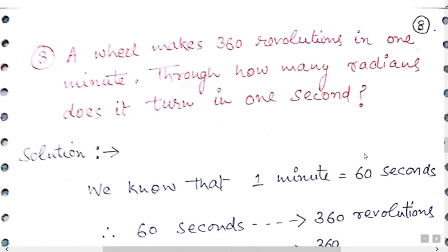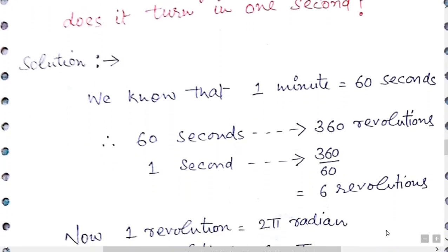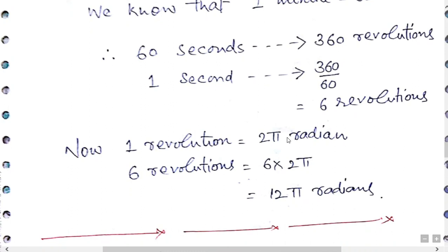The next question is a statement type problem. A wheel makes 360 revolutions in one minute. How many radians does it turn in one second? Since one minute equals 60 seconds, in 60 seconds there are 360 revolutions, so in one second there are 6 revolutions. One revolution equals 2π radians, so 6 revolutions equal 12π radians.